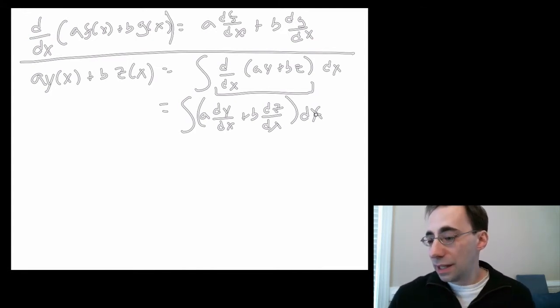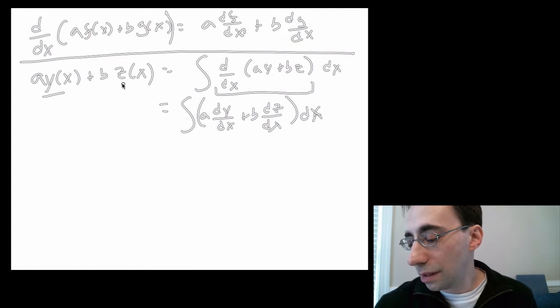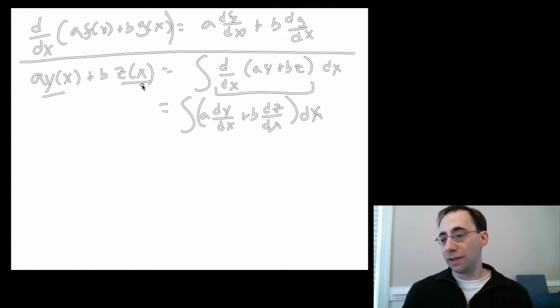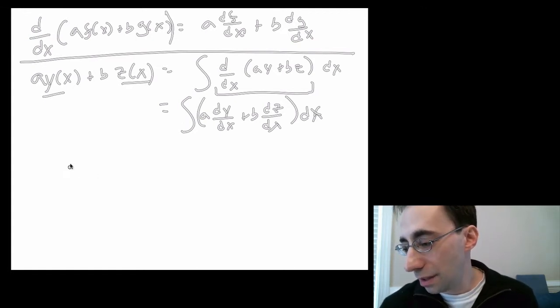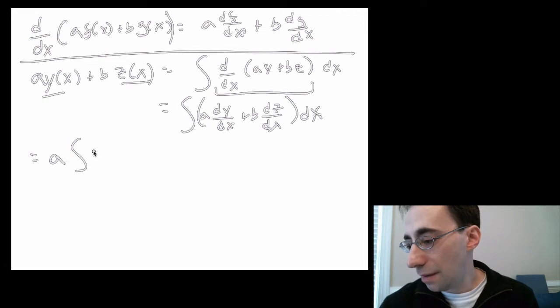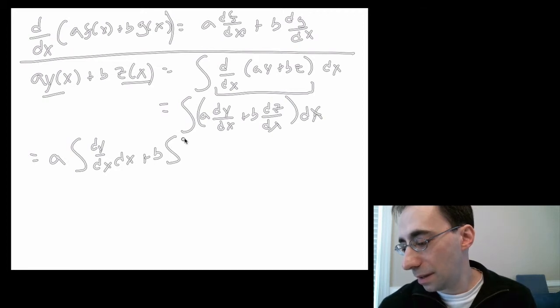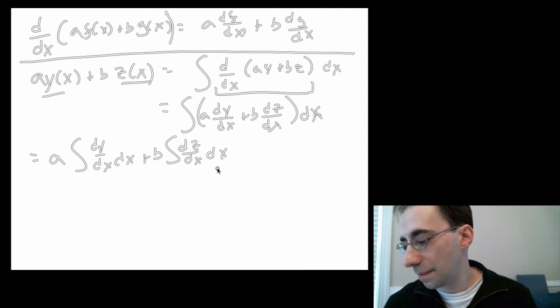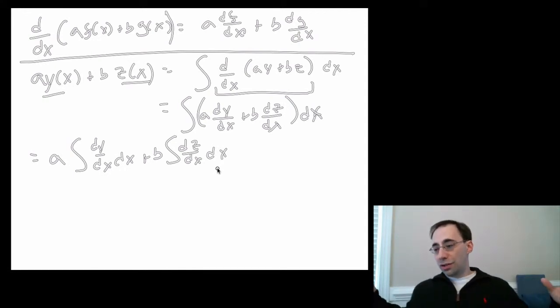The second way is to individually use the antiderivatives of these things. So this is also equal to a times the integral of the derivative of y with respect to x dx plus b times the derivative of z with respect to x dx. So now, instead of taking off the whole thing at once, we do it together. And now, you see we're done.